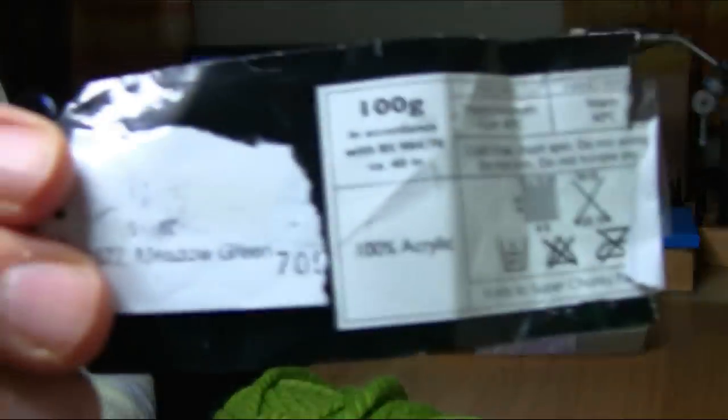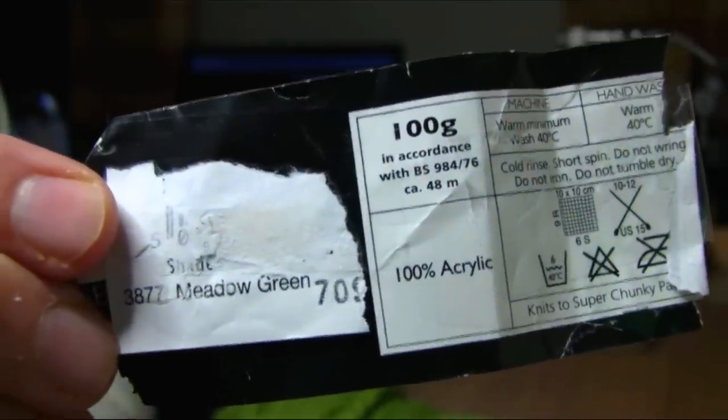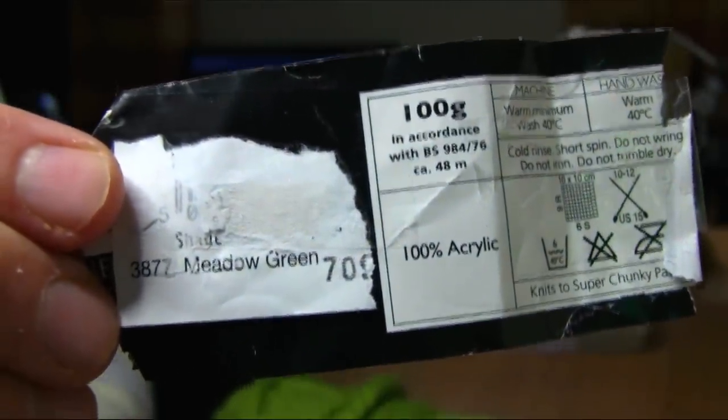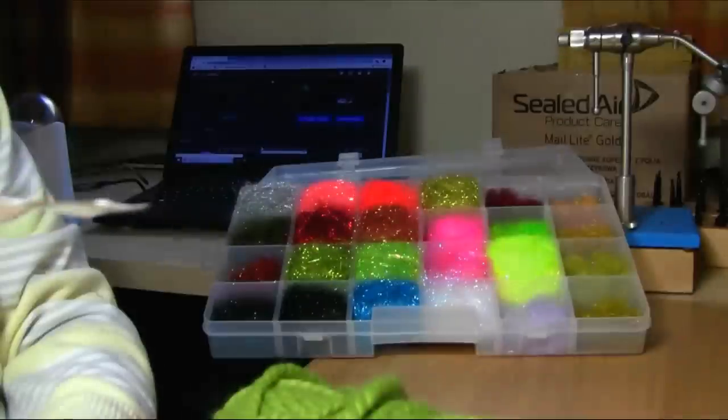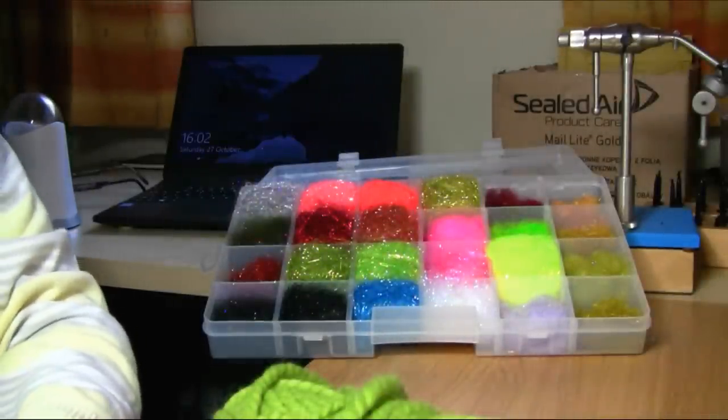I'll show you the stickers. I hope you can just read this. The color code is 3877. It's just acrylic wool, knitting wool.